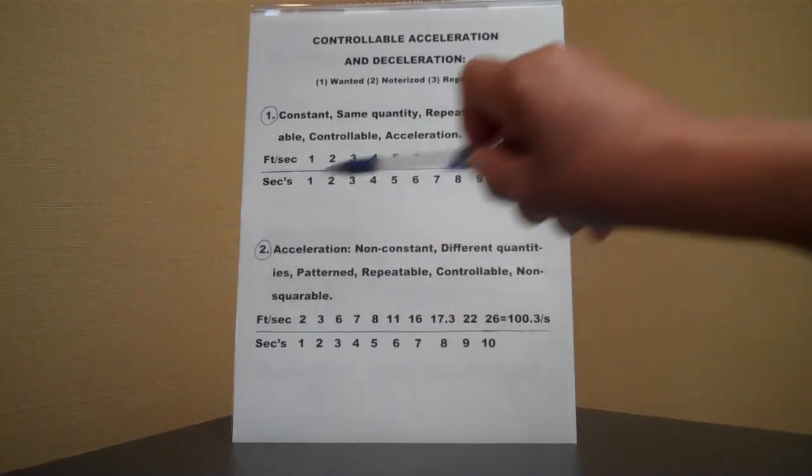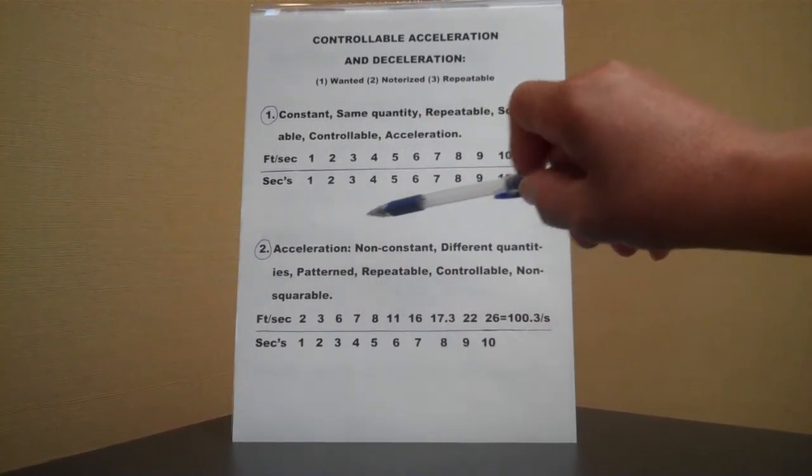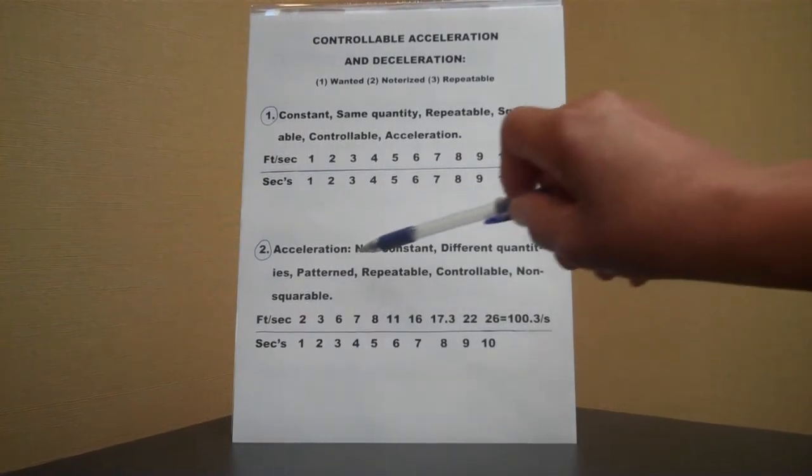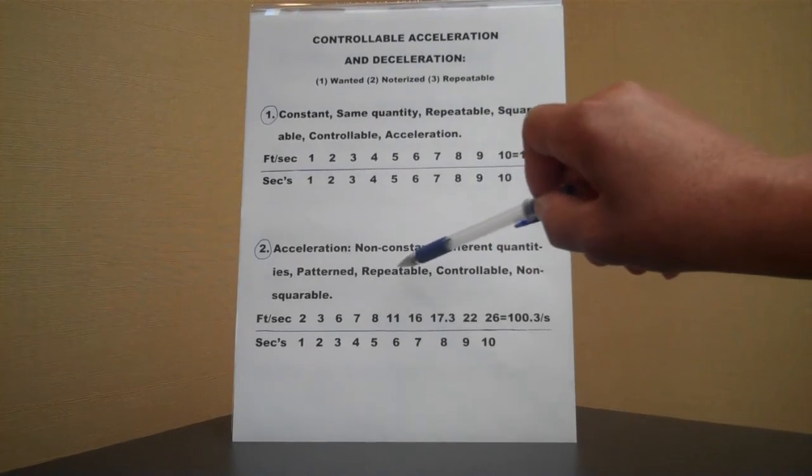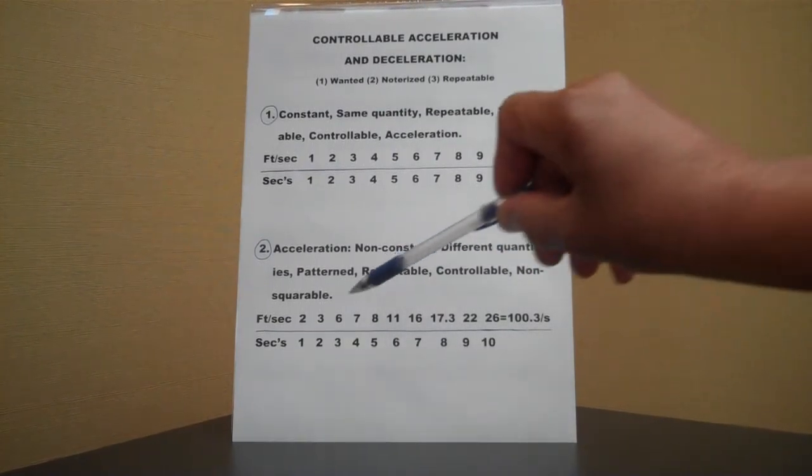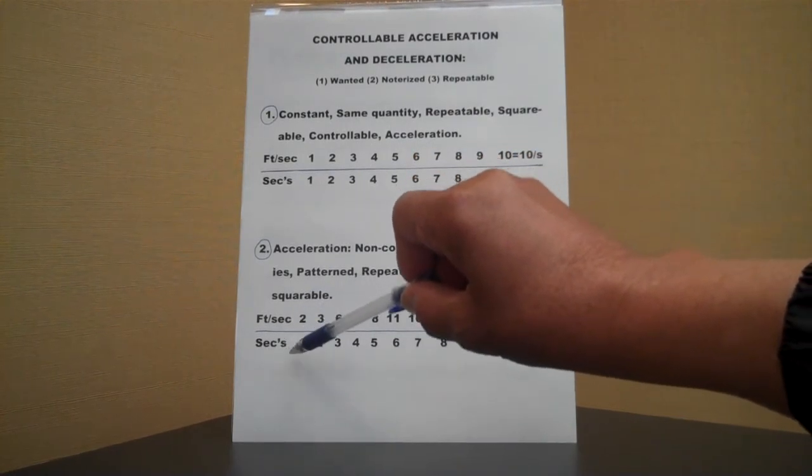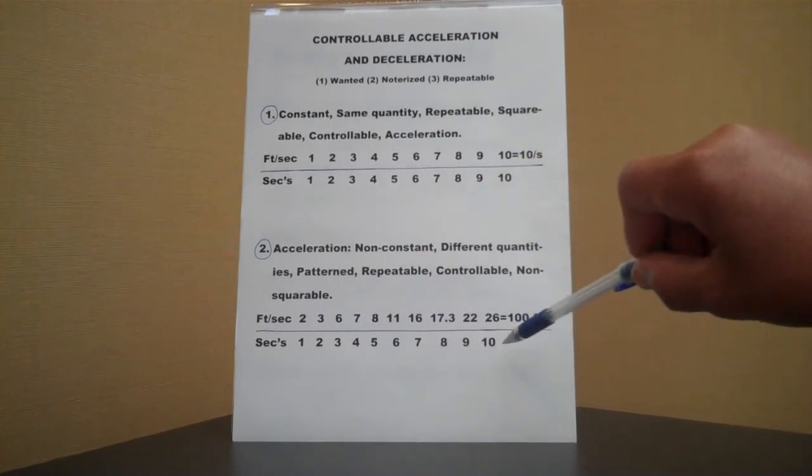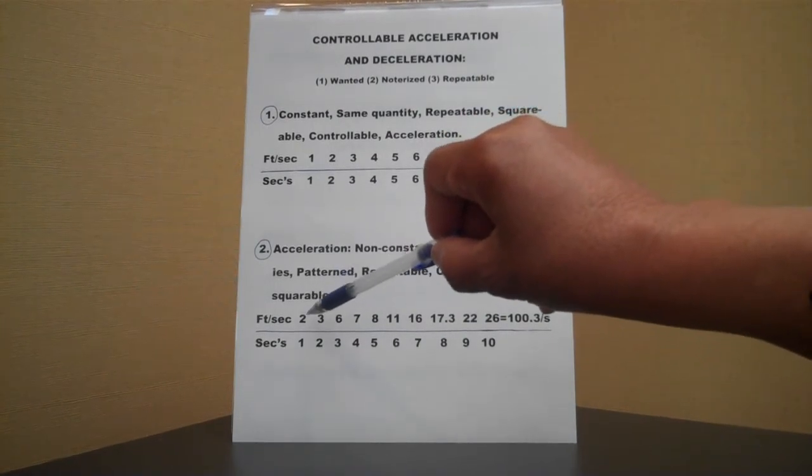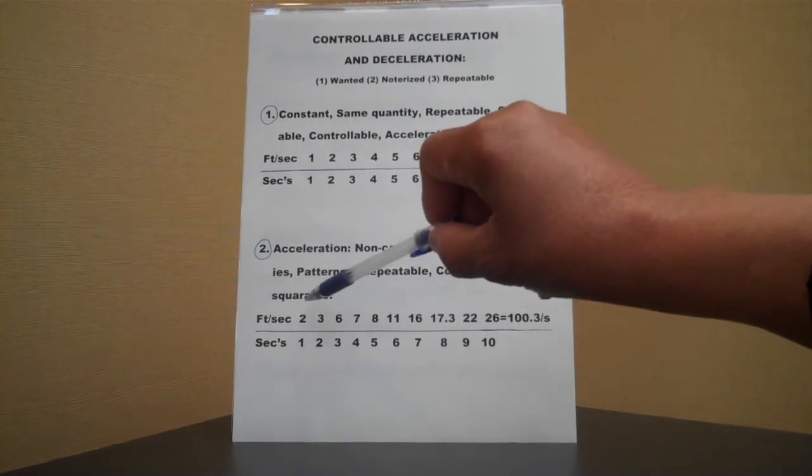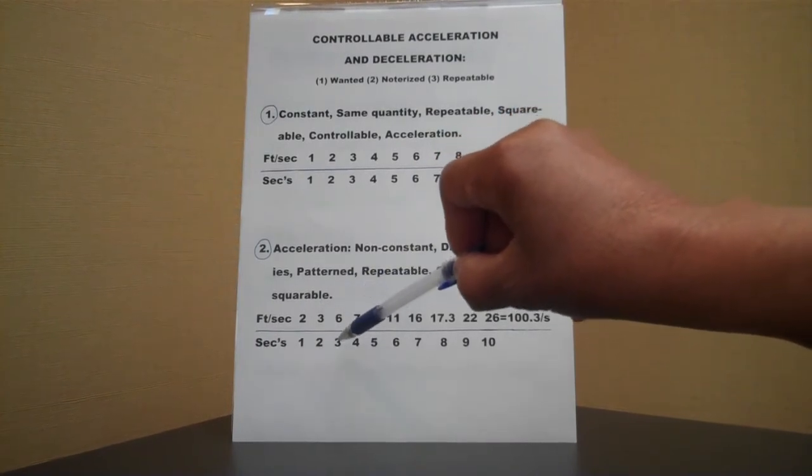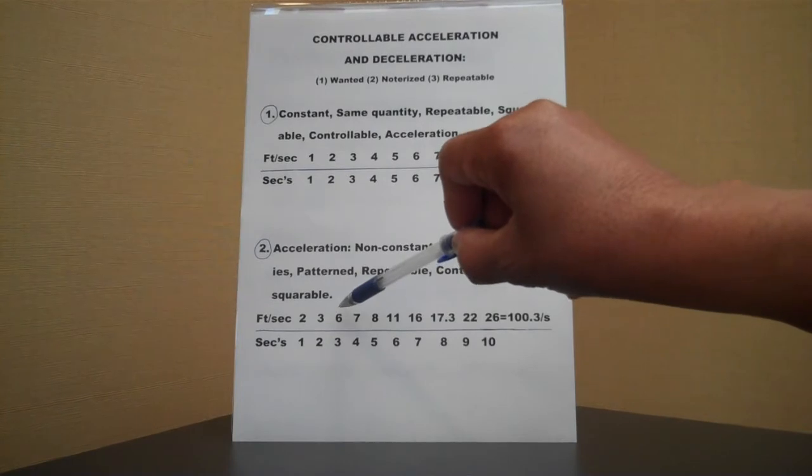Now, we shall go to number two. This is acceleration also, but non-constant, different quantities. It is patterned, repeatable, controllable, and non-squarable. Once again, it says feet per second, and also the seconds are written at the bottom, up to ten seconds. First off, you start with two feet per second, then you add three feet to it, then you add, on the third second, six feet to that.